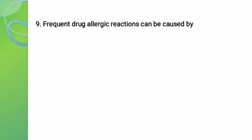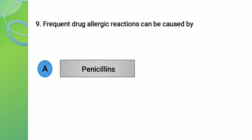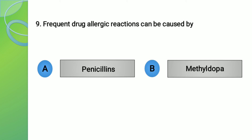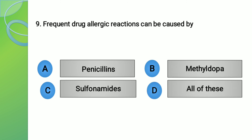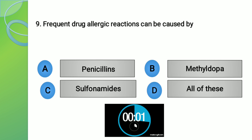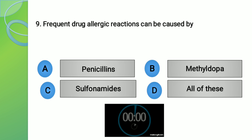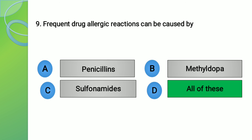Moving to question number 9. The question is: frequent drug allergy reactions can be caused by? The options are: A - Penicillins, B - Methyl dopa, C - Sulfonamides, and D - All of the above. The right answer is option number D, that is all of the above.